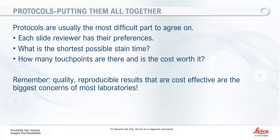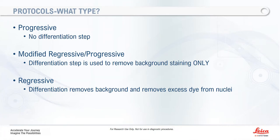There are generally three protocol types. Progressive staining has no differentiation step — hematoxylin, water, bluing, water, alcohol, eosin. Modified regressive includes a differentiation step only to remove the blue background, not impacting nuclear detail. Full regressive staining means we overstain with hematoxylin, then use acid to gently remove the background and any excess dye from the nuclei.